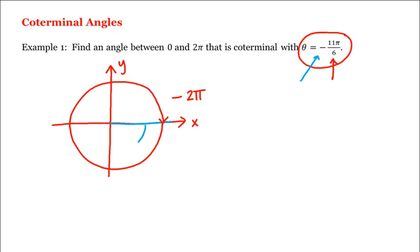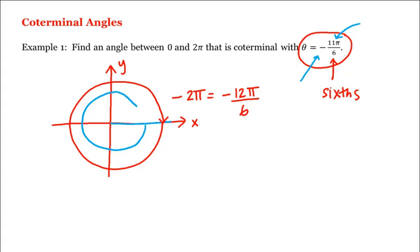Now how many 6ths is negative 2π? That's negative 12π divided by 6. Which means that our angle, negative 11π over 6, didn't quite make it there, because 11 is smaller than 12. Which means we're π/6 short of negative 2π, or negative 12π/6. So here's our angle, negative 11π over 6.